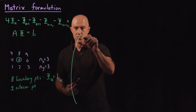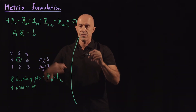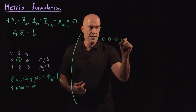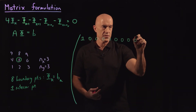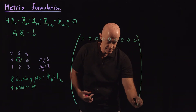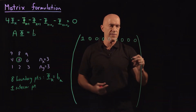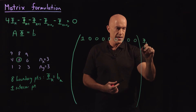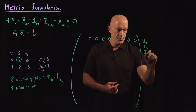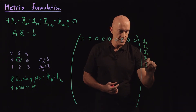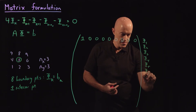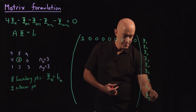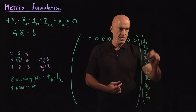It's nine by nine, so we have nine columns. And then the unknown vector is our phi. So we'll have phi sub one, phi sub two, phi sub three, phi sub four, phi sub five, six, seven, eight, and nine — this is our column vector of unknowns.